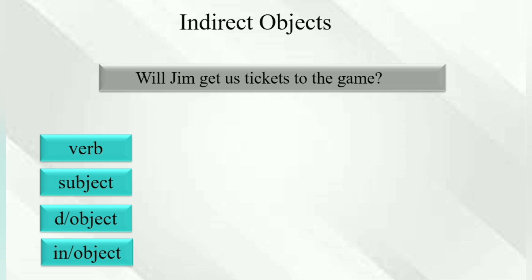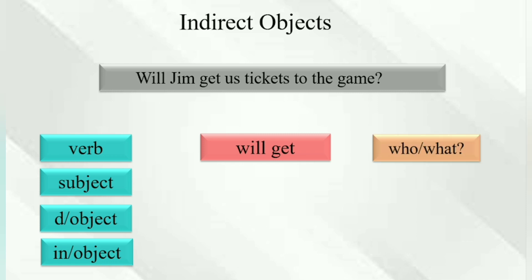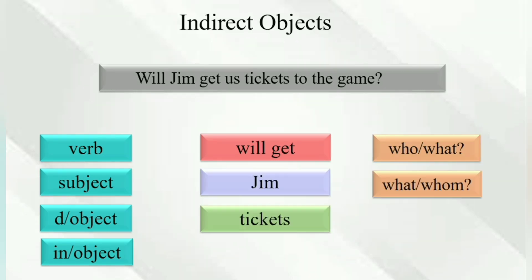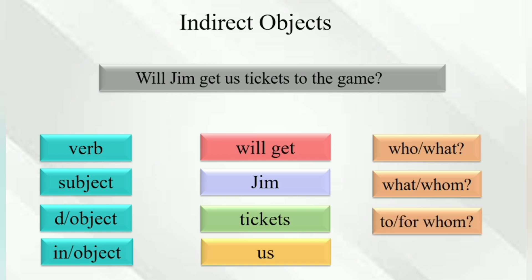'Will Jim get us tickets to the game?' Will get — who will get? Jim. Jim will get what? Tickets. Tickets for whom? For us. So 'us' is the indirect object.